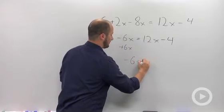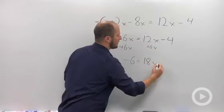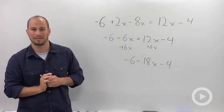Everything works out as well. So we add 6x. Our negative 6 will stay there. Add 6 to the 12. That will give us 18. And our minus 4 stays there as well.